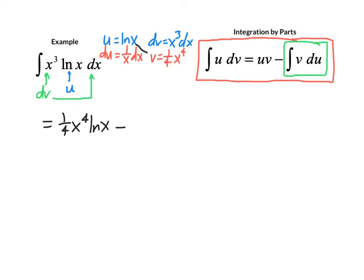Minus the integral of v times du. Now if we just write it out that way for this example, v is 1 fourth x to the fourth, and du is 1 over x times dx.